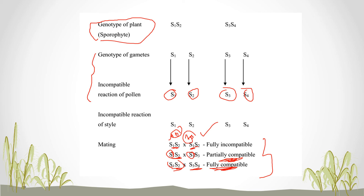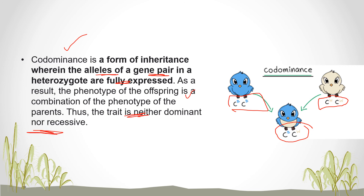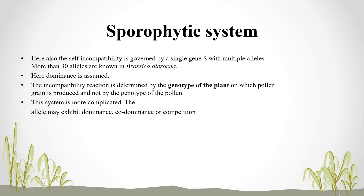Go through the video again and note the key statements, as they can fetch good marks in exams. Co-dominance is a form of inheritance where both alleles of a gene pair in a heterozygote are fully expressed — neither dominant nor recessive. This co-dominance can also occur in both the gametophytic system and the sporophytic system, where both dominant and recessive characters are expressed. Only if you have different alleles can you establish compatibility between two plants.